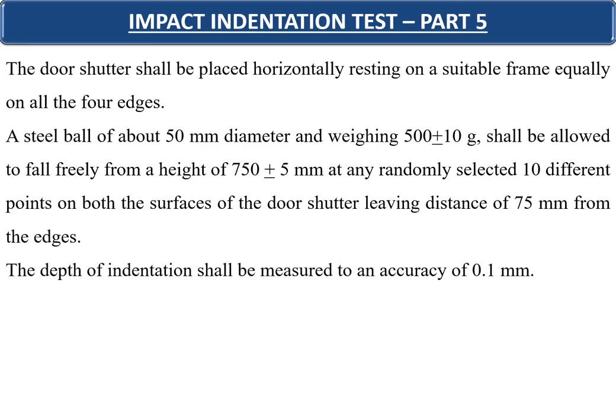Part 5 covers the impact indentation test. The door shutters shall be placed horizontally resting on a suitable frame on all four edges. A steel ball of about 50 mm diameter weighing 500 ± 10 grams is allowed to fall freely from a height of 750 ± 5 millimeters at 10 different randomly selected points on both surfaces, leaving a distance of 75 mm from the edges. The depth of indentation shall be measured to an accuracy of 0.1 millimeters.